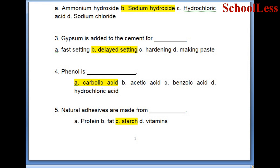Question 3. Gypsum is added to the cement for: fast setting, delayed setting, hardening, or making paste. Question 4. The carbolic acid is phenol. So A is the right answer.